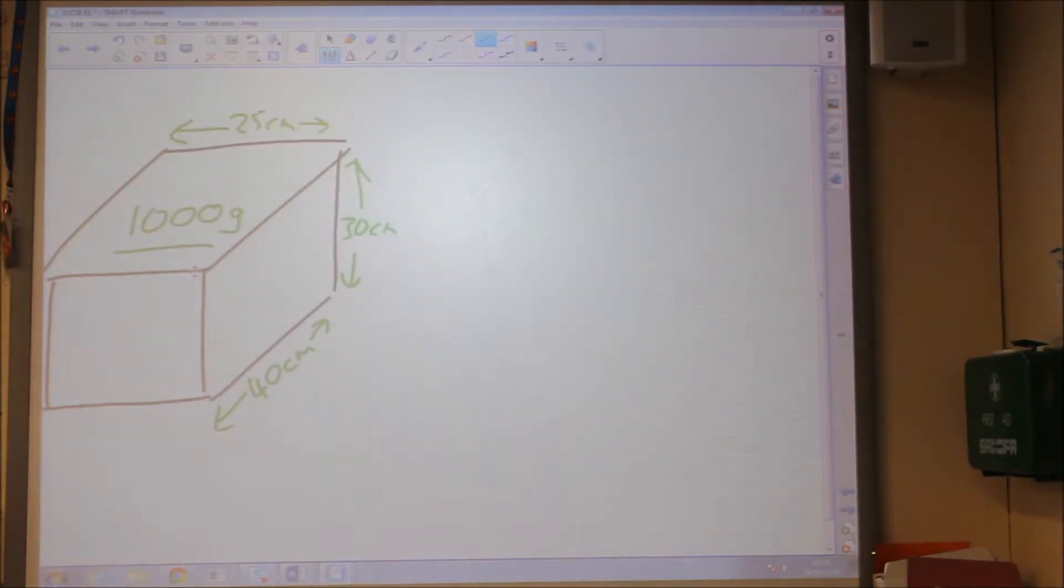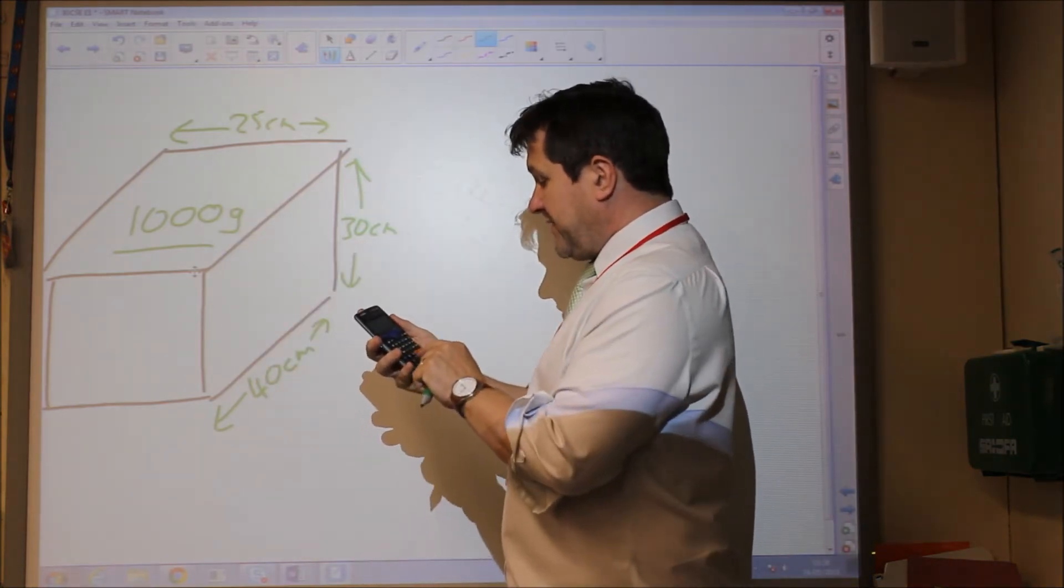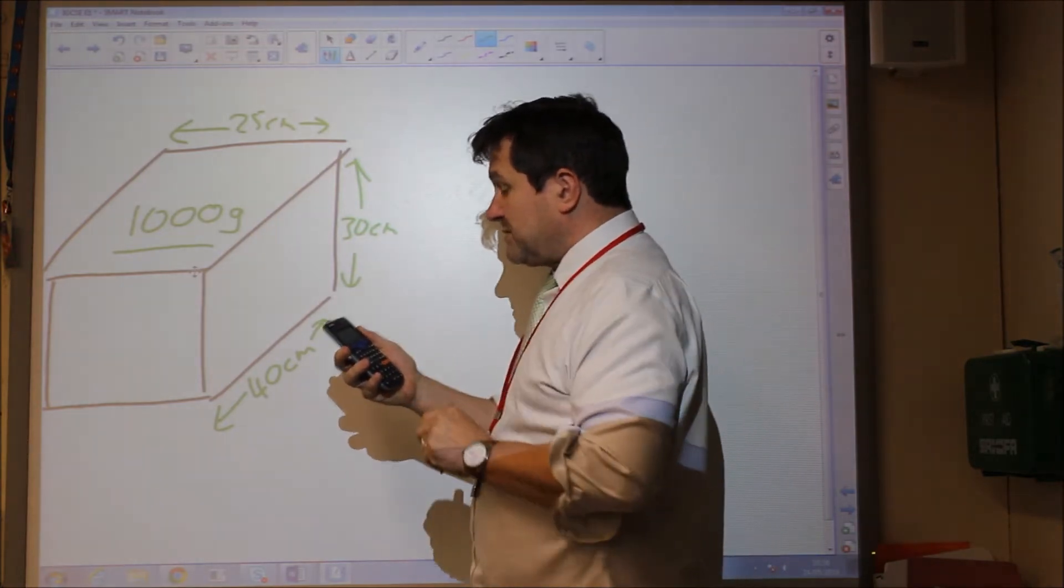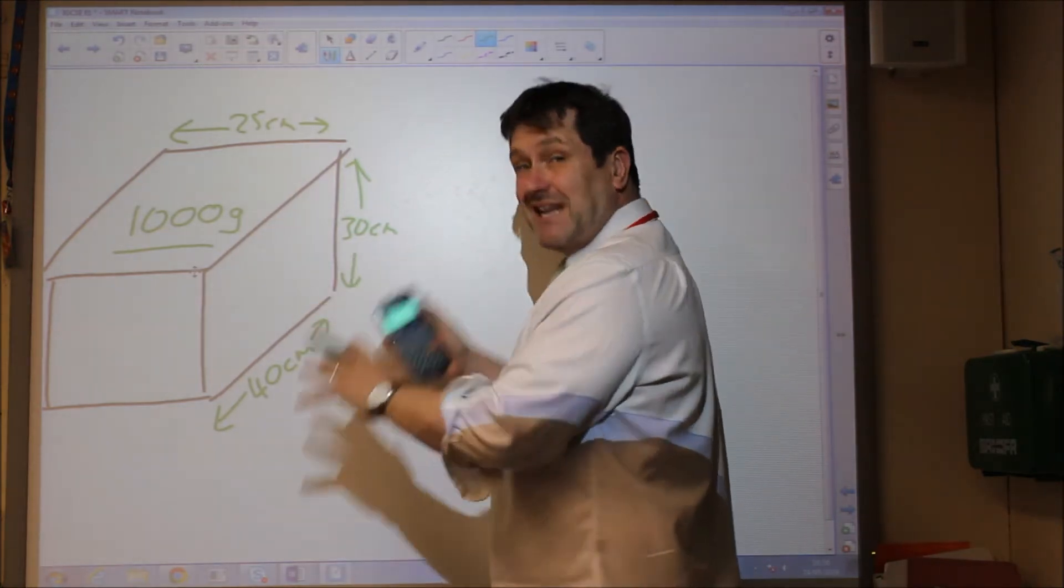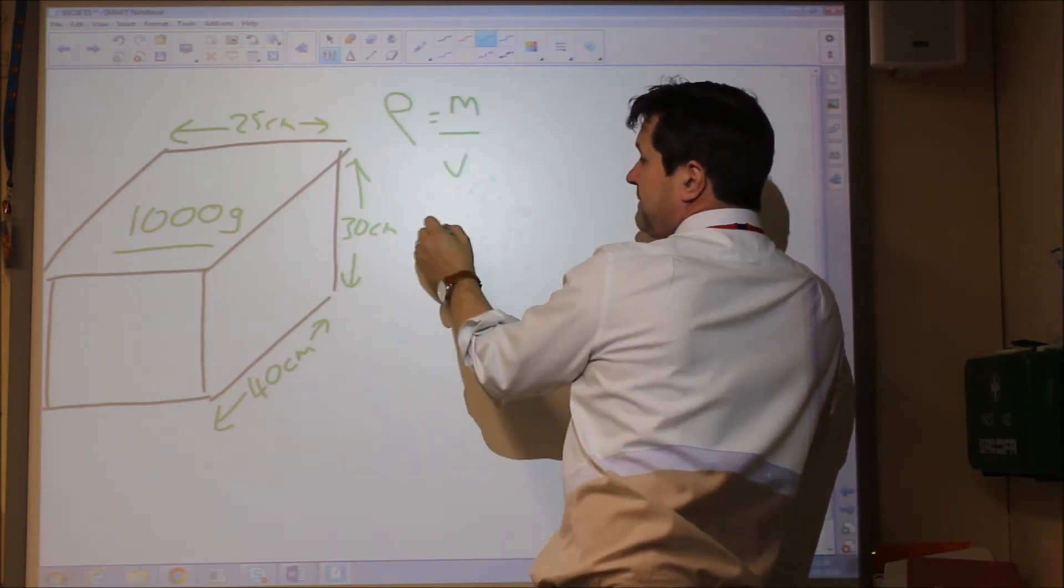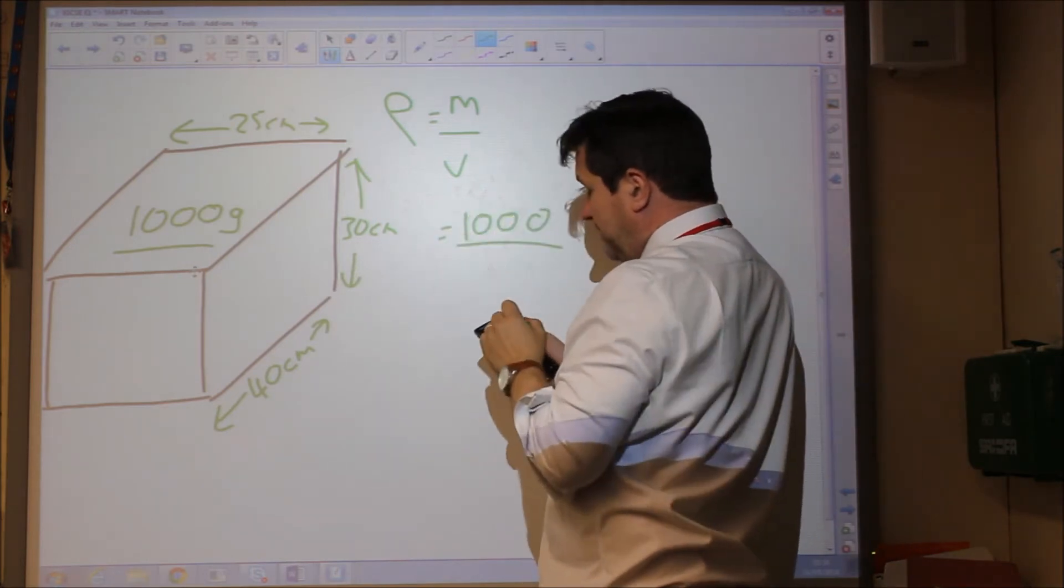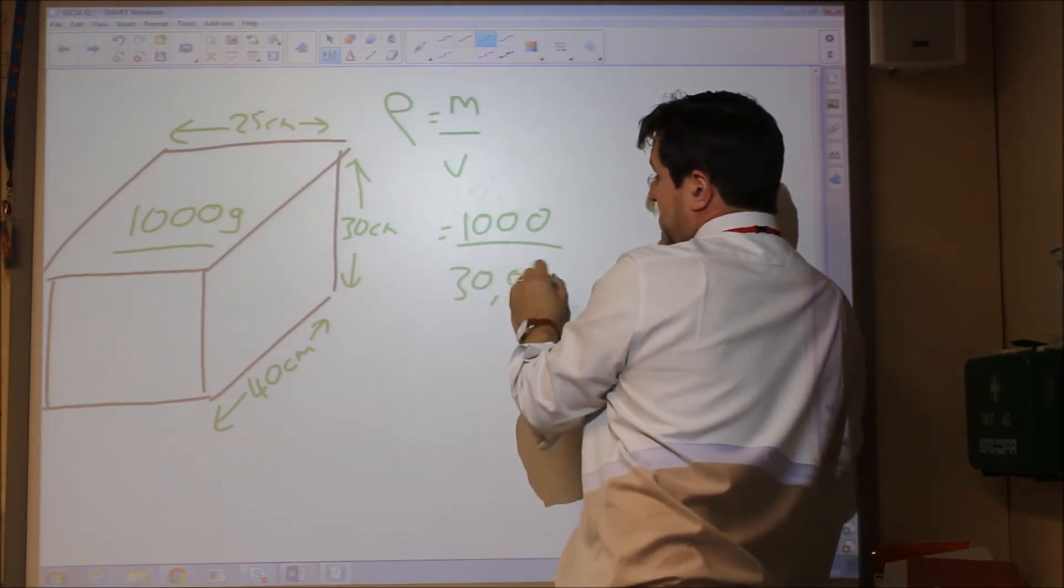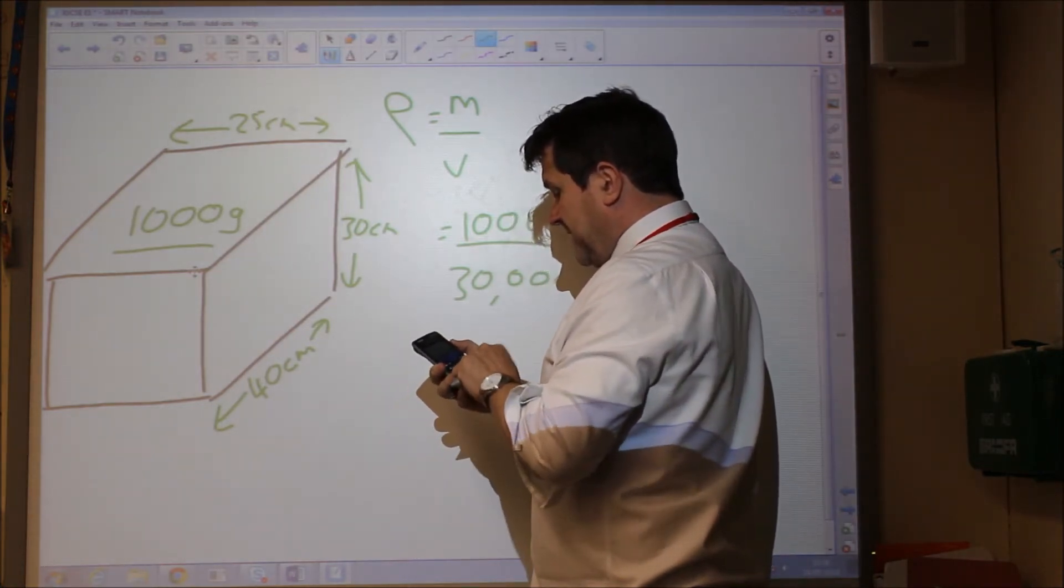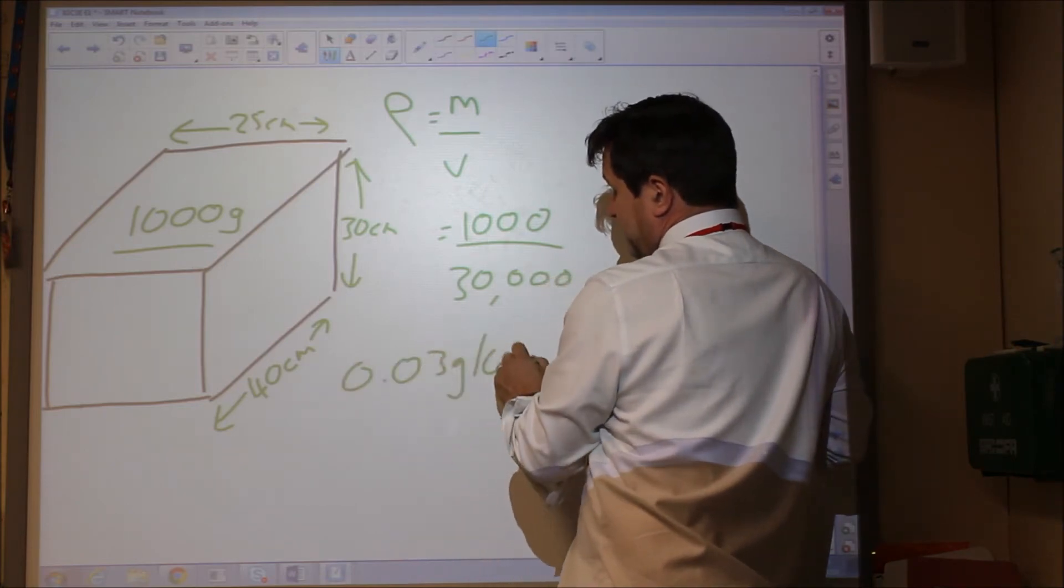For example, if we work this out, the volume is 25 times 30 times 40, which comes out to be 30,000 centimetres cubed. So the density is mass divided by volume. The mass is 1,000 grams. The volume is 30,000 centimetres cubed. And that equals 0.03 grams per centimetre cubed.